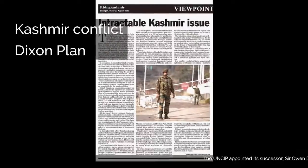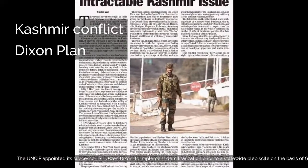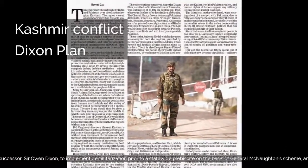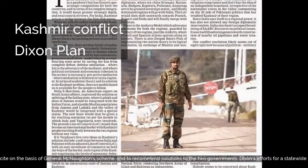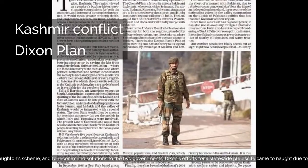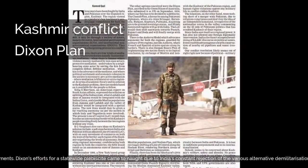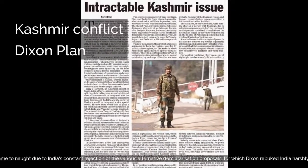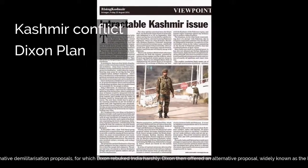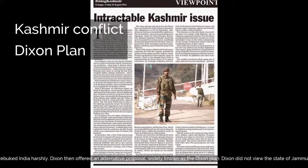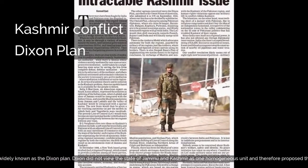The UNCIP appointed its successor, Sir Owen Dixon, to implement demilitarization prior to a statewide plebiscite on the basis of General McNaughton's scheme, and to recommend solutions to the two governments. Dixon's efforts for a statewide plebiscite came to naught due to India's constant rejection of various alternative demilitarization proposals, for which Dixon rebuked India harshly. Dixon then offered an alternative proposal widely known as the Dixon Plan. Dixon did not view the state of Jammu and Kashmir as one homogeneous unit and therefore proposed that a plebiscite be limited to the valley.